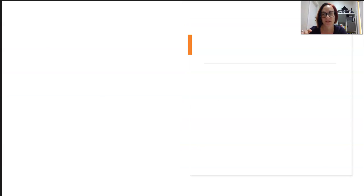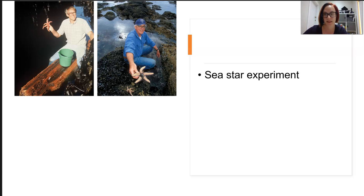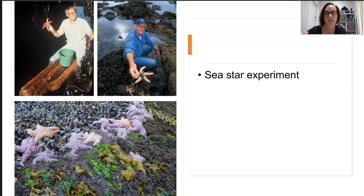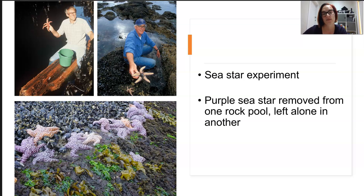A classic example of this idea of complex interactions being available in a food web is Robert Paine's sea star experiment. This is Robert T. Payne. And he removed the purple sea star from a particular rock pool and he left an adjacent rock pool alone. Now, because the sea star was a predator of a certain type of muscle,